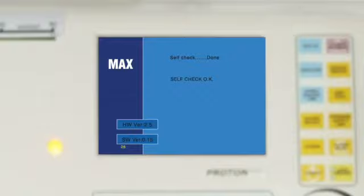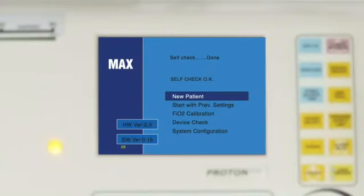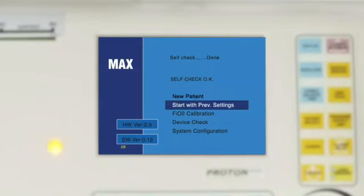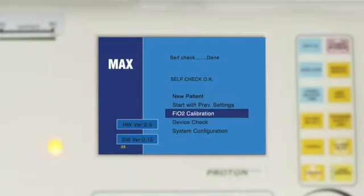Main menu: The main menu has five options - new patient for connecting new patient to the ventilator, start with previous setting, select a previous setting, and FiO2 calibration which allows direct FiO2 sensor calibration.